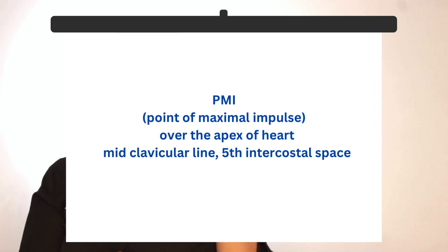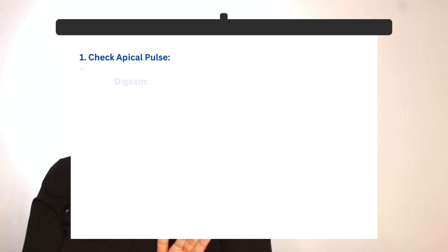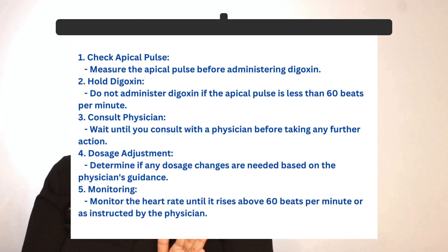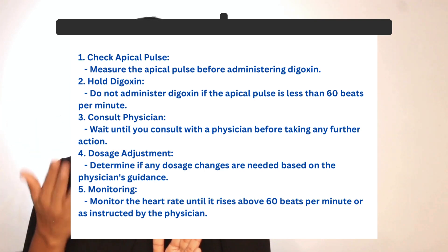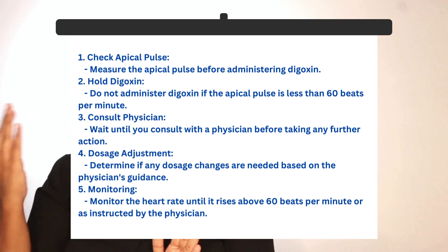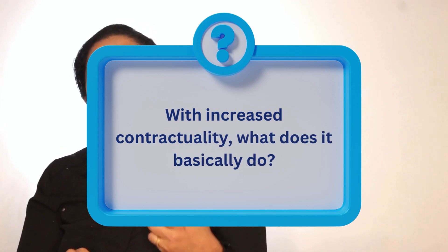If the apical pulse is less than 60, hold digoxin — do not administer it. Wait until you consult with the physician to see if any changes need to be made to the dosage, or hold it entirely until the heart rate comes above 60.